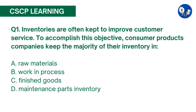Inventories are often kept to improve customer service. To accomplish this objective, consumer products companies keep the majority of their inventory in: A. Raw materials, B. Work in process, C. Finished goods, D. Maintenance parts inventory. The correct answer is C. Finished goods inventories are maintained in industries where response to customer demands needs to be immediate. For these industries, product must be shipped from stock as soon as the order is received from the customer.